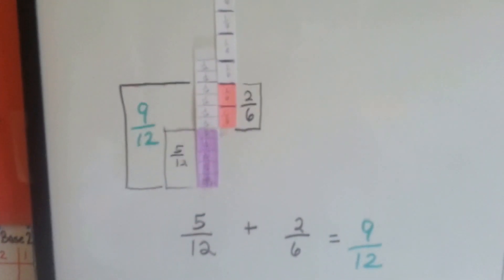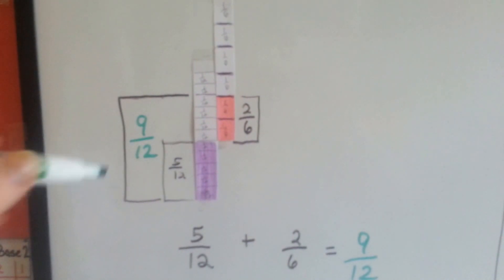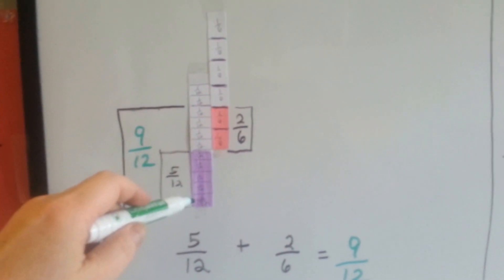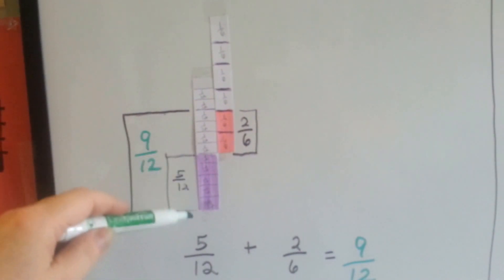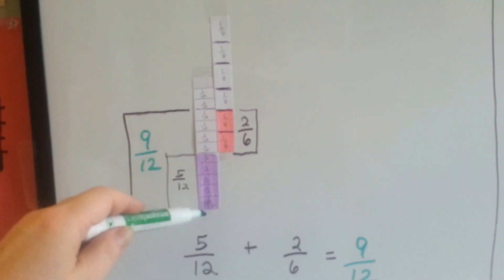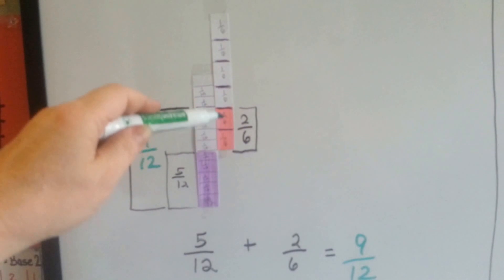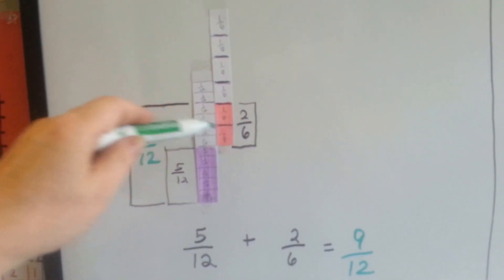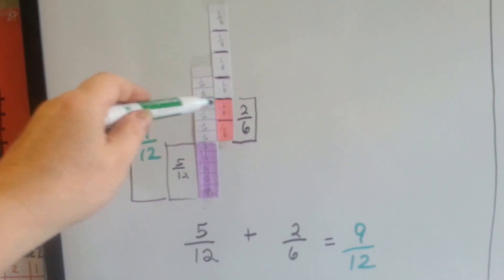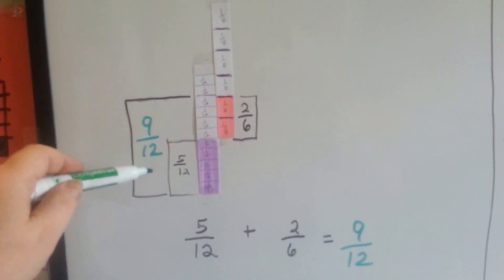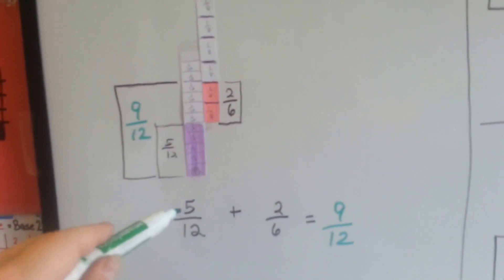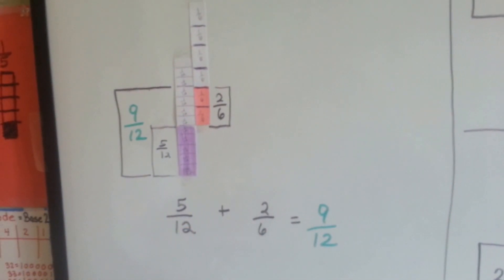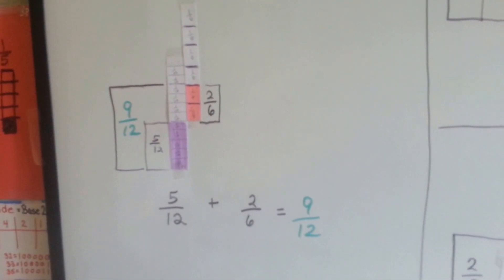Look at this one. I have a model of twelfths and a model of sixths. I've got five-twelfths colored in on this one and two-sixths colored in on this one. I place them next to each other and I can see that the lines line up perfectly as nine-twelfths. 5-6-7-8-9. So five-twelfths plus two-sixths equals nine-twelfths. Isn't that easy?